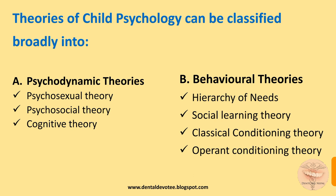The theories of child psychology can be broadly classified into psychodynamic theories and behavioral theories. Psychosexual theory, psychosocial theory, and cognitive theory fall under psychodynamic theories, while hierarchy of needs, social learning theory, classical conditioning theory, and operant conditioning theory all fall under behavioral theories.